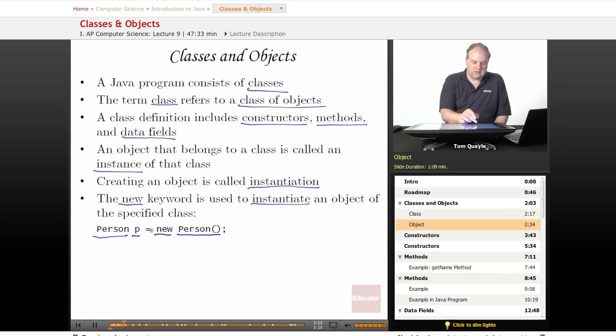And then the assignment operator equals assigns that newly created object of type person to the variable p. So I can then use p as an object in my program from that point forward in the program.